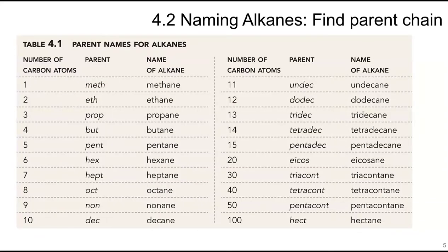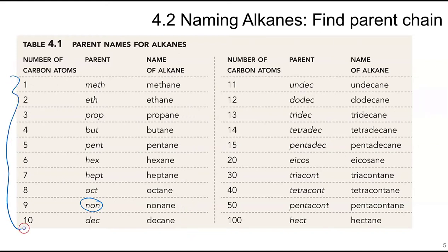After you find the parent chain, match it with its parent name prefix. For nine carbons it would be 'non,' making it nonane. The prefixes you need to know are: methane, ethane, propane, butane, pentane, hexane, heptane, octane, nonane, decane — one through ten. You won't often encounter pentacontane (50 carbons) or hectane (100 carbons), so knowing one through ten is sufficient for this class.